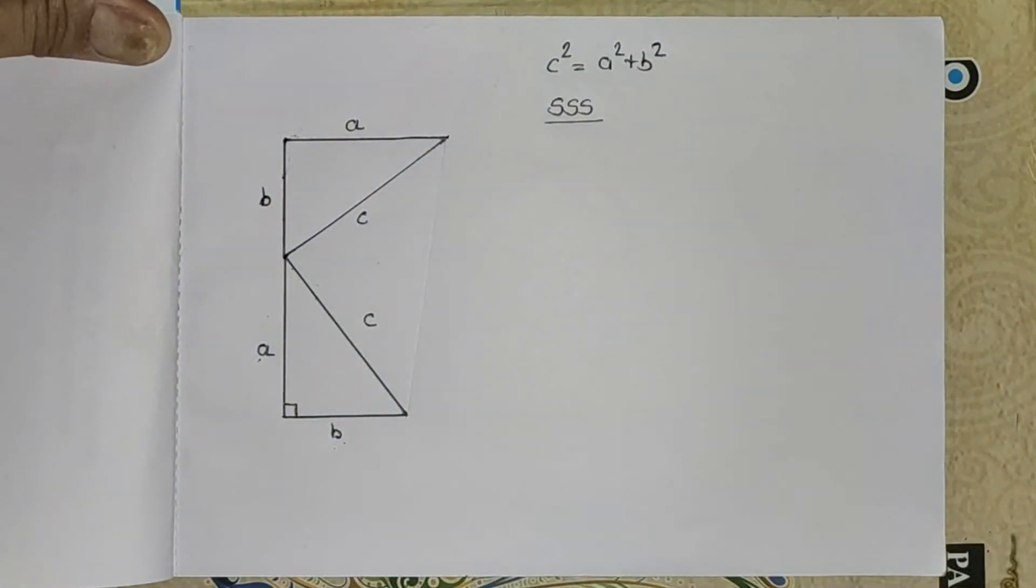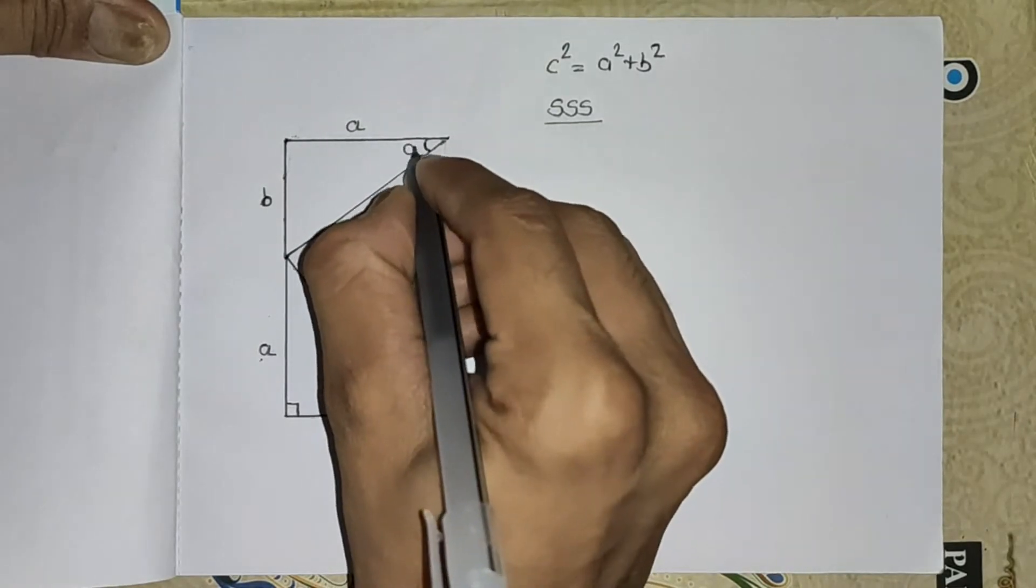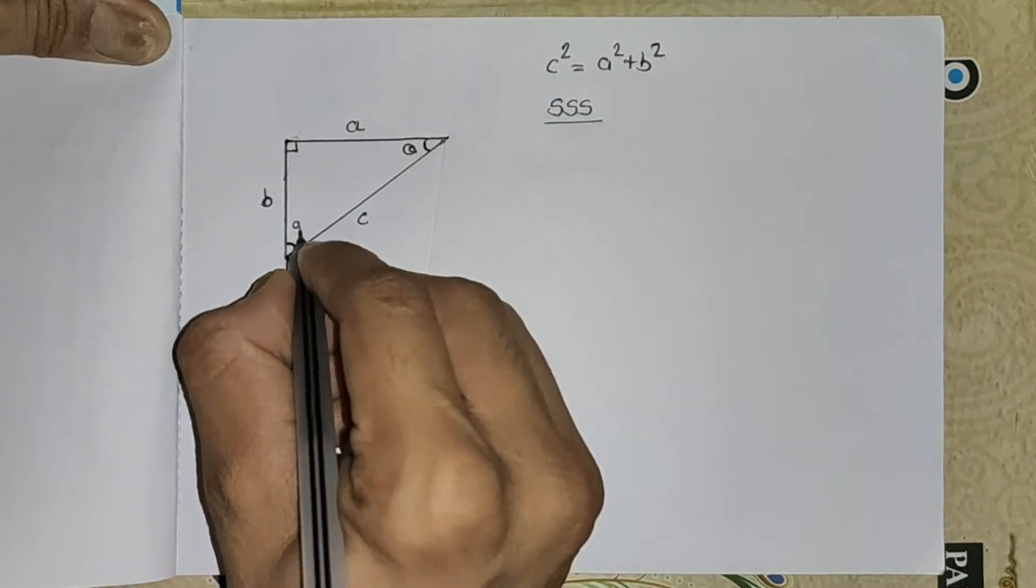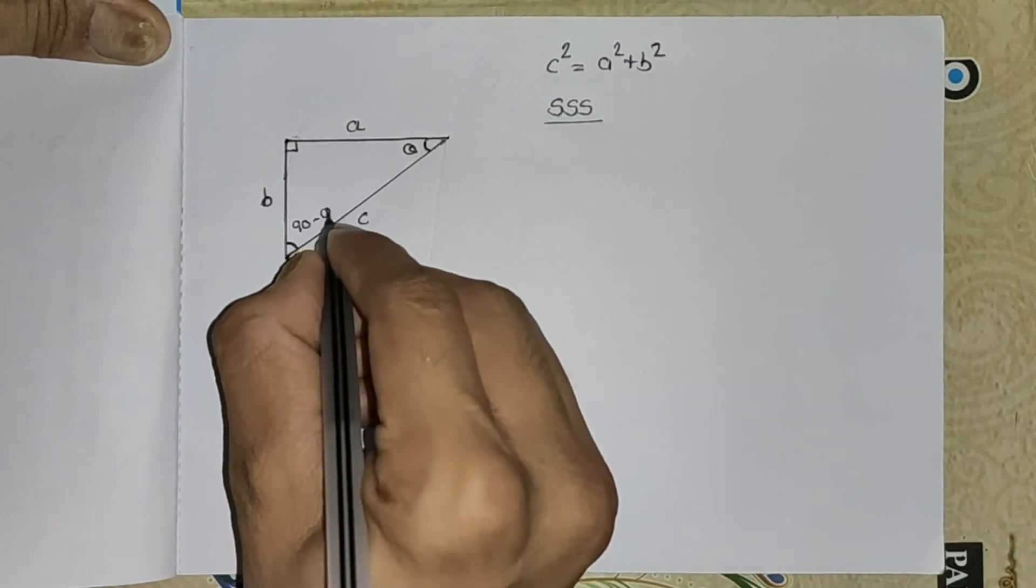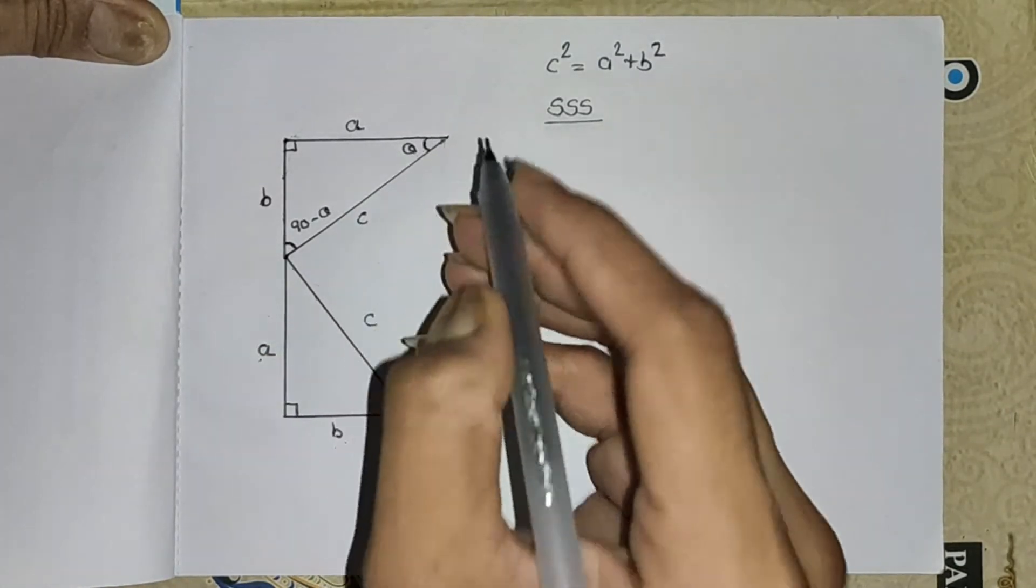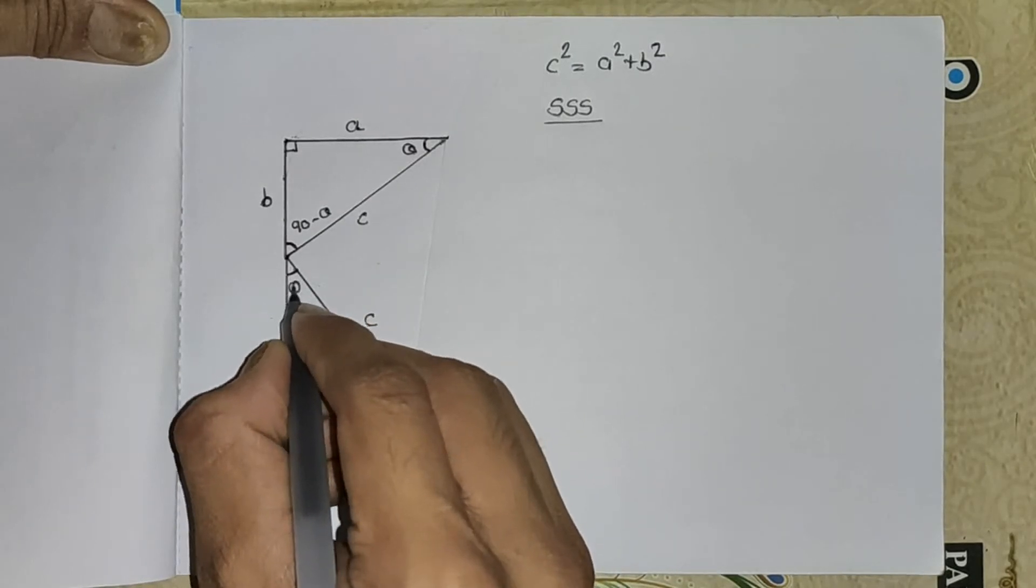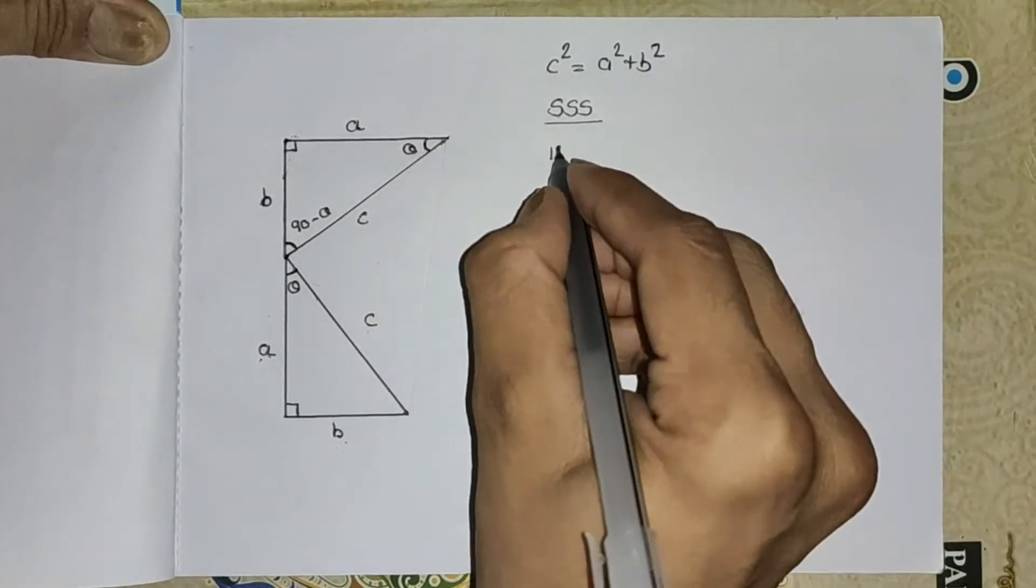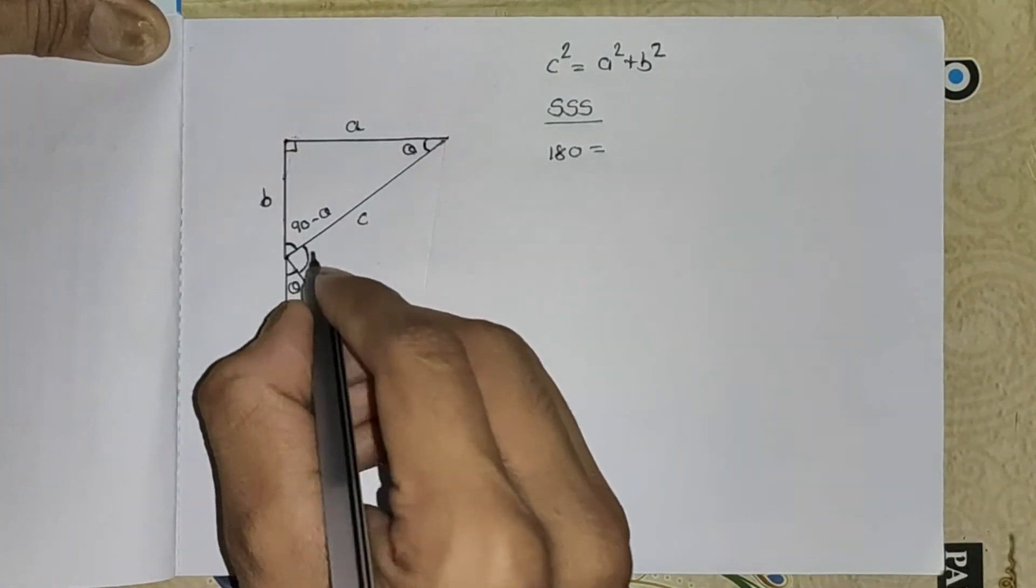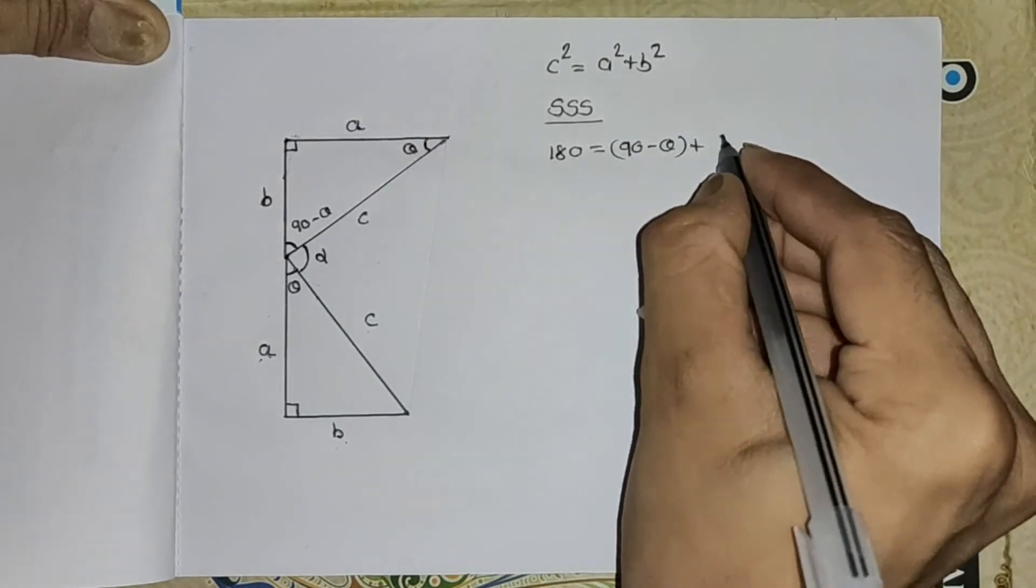If I take this angle as theta, we know this is 90, so this is 90 minus theta. The angle between a and c is theta, so here this will also be theta.